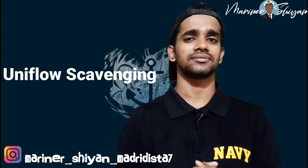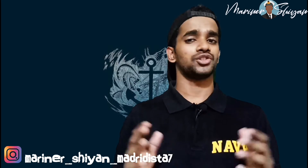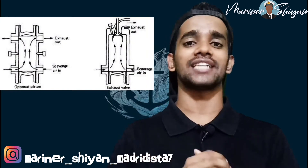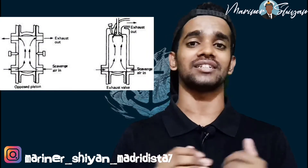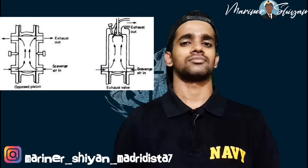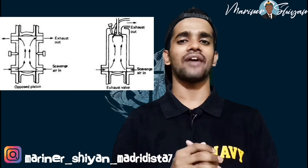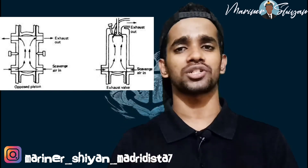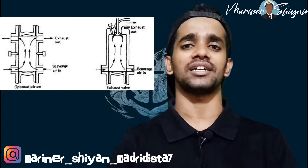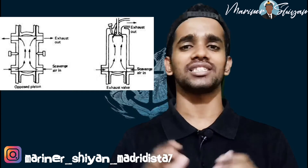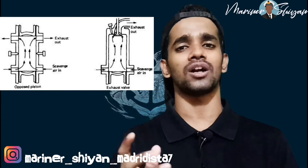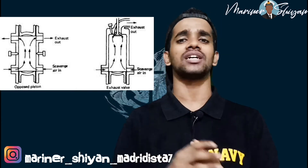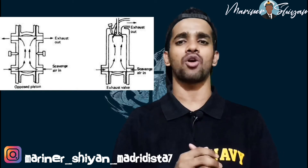Number one: Uniflow scavenging. As its name suggests, it is the flow of air in the same direction. The low pressure scavenge air is allowed to enter the cylinder from the lowest position of the cylinder, and it is given a slight rotation and swirl because of the shape of the scavenge port.